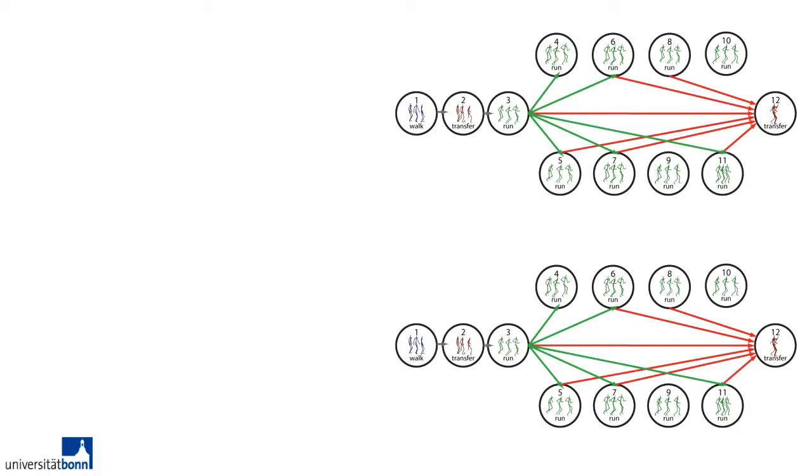From walking, there is a possible transition to running. Within the run cluster, the nodes are actually strongly connected as can be seen by the adjacency metrics given in section 6 of the paper. Also, from many running steps, there is a possible transition into jumping.